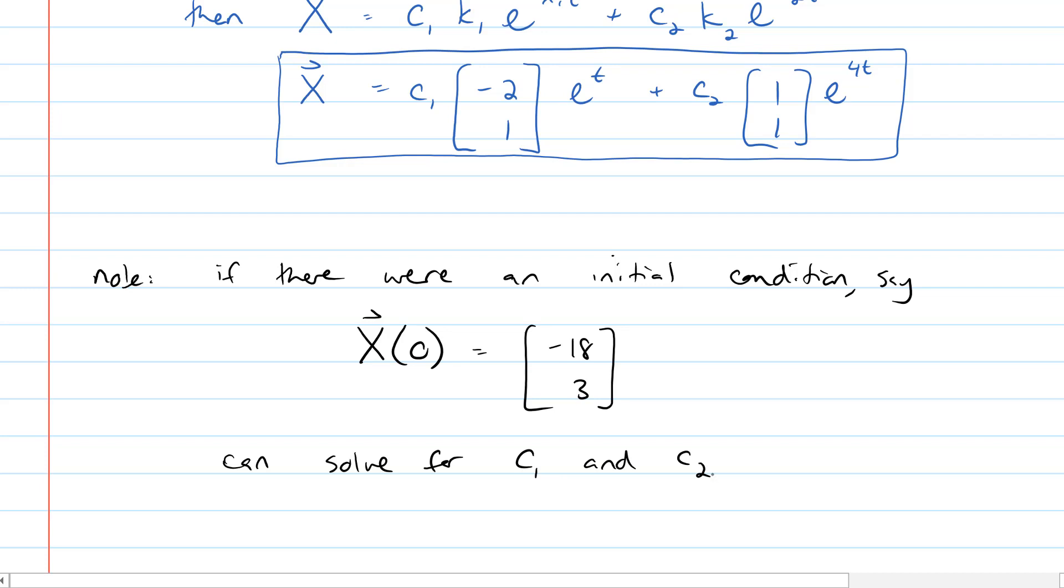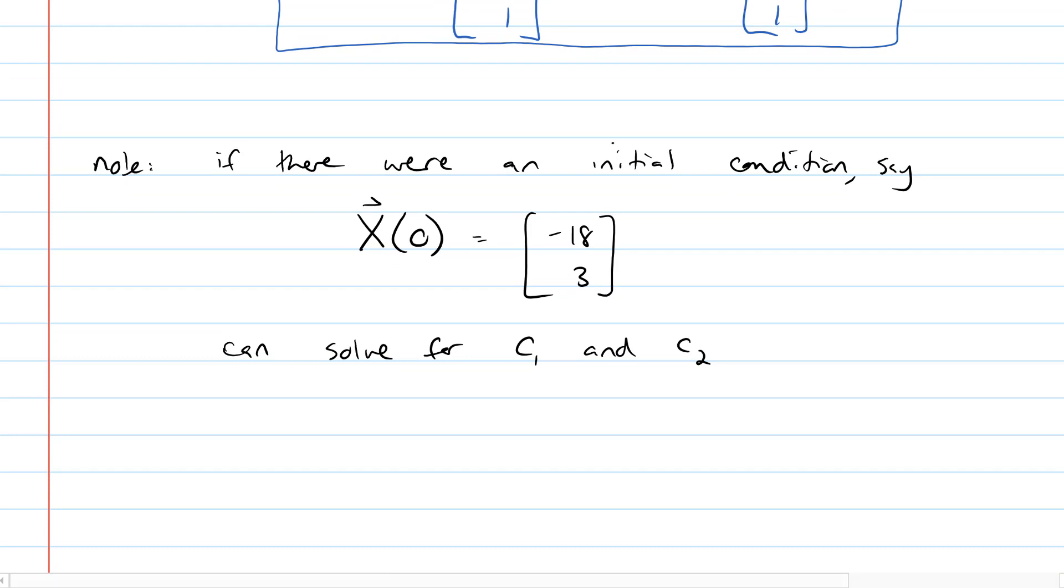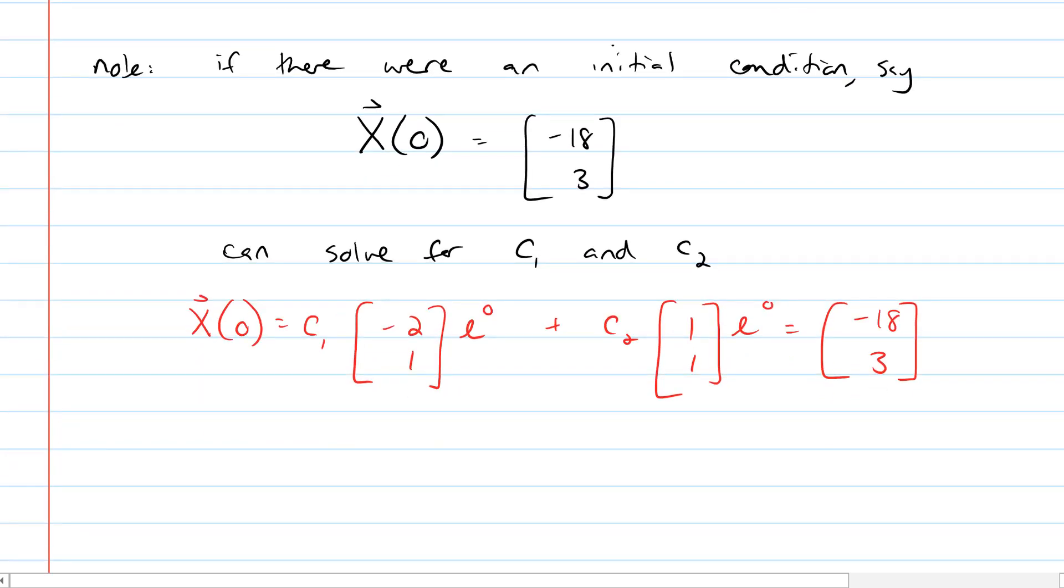So if we take a look at our vector, our solution for vector X up above, then we can say that X of 0 equals c1 onto negative 2, 1, e to the 0, plus c2 onto column vector 1, 1, e to the 0, which equals negative 18, 3. And then if you multiply everything out, you're going to get two equations. The top one is going to be negative 2c1 plus c2 equals negative 18, and c1 plus c2 equals 3.